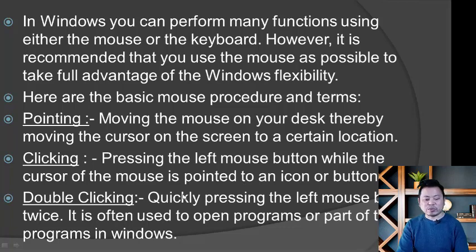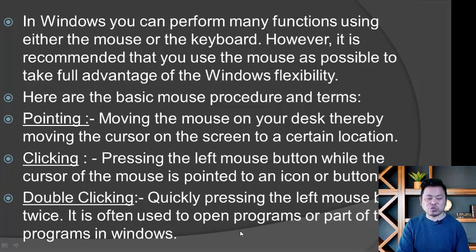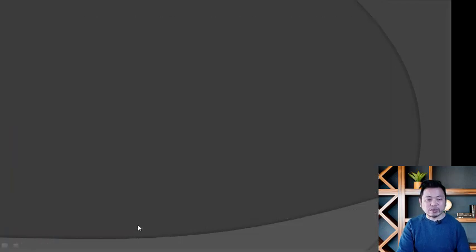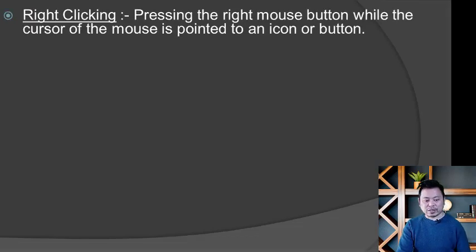When using the mouse, single clicking means one click. Double-clicking means clicking twice — it is often used to open a program or part of a program in the window. So the mouse procedures are: pointing, clicking, and double-clicking.